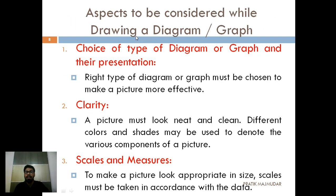Next, the aspects to be considered while drawing the diagram or a graph. When you are preparing the diagram or graph, there are six major points which you have to understand. First, that is choice of type of diagram and graph. Which kind of diagram or which kind of information or graph you are using, that is also important. Let's take an example - if you are using bar diagram, if you are using any kind of different graph, if you are using pie chart. So which information, on the basis of that information, you are going to use the diagram or the chart or the graph. Then, the clarity. When you are presenting anything by the way of picture, it should be neat and clean. It must look neat and clean. Same way, you can use different shades, different colors to denote everything which is there in the picture. So clarity is more important. Third, scales and measurement. When you are making any kind of picture, look appropriate in size, scales, it must be in accordance with the data.